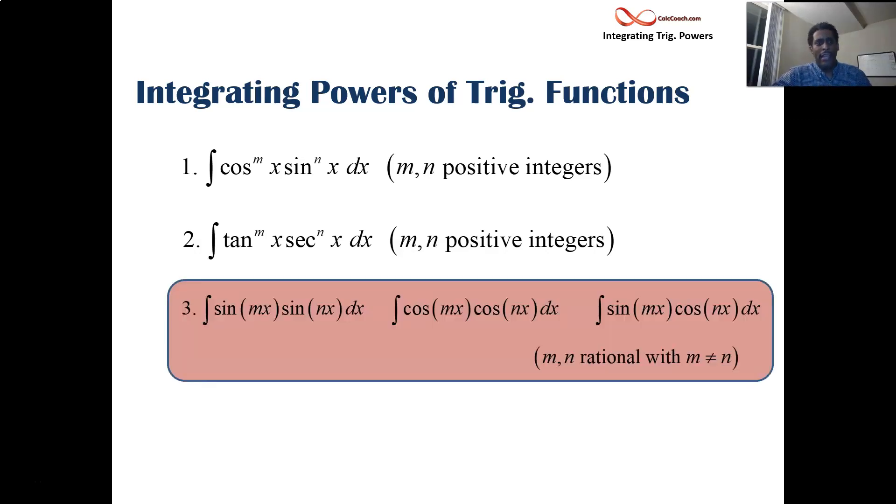We want to talk about how to integrate when you have a product of sine and sine with different multipliers on the x, cosine and cosine with different multipliers on the x, or maybe a mixture of sine and cosine with different multipliers on the x. This might be the easiest of all the techniques because you just throw in an identity and you make your way through the problem with minimal trouble. You've got to make sure you use the right identity.